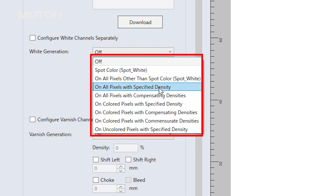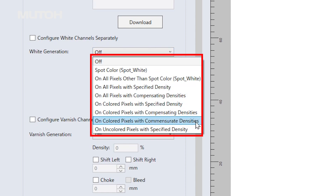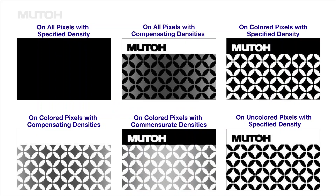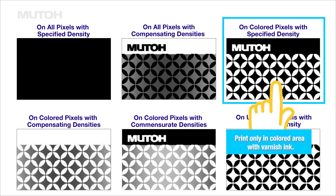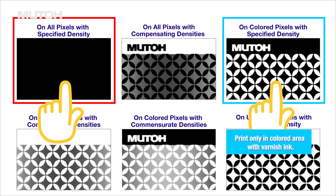We can set up the spot color here. And here, six modes of spot color are automatically generated based on the shades of the image data. We can select how we want to express the spot colors from among them. Select this one for varnish ink, and for white ink, select this one.